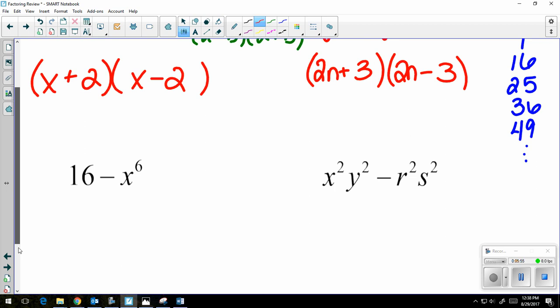Two more examples, and then we'll move on. Once again, two parentheses. One gets a plus, one gets a minus. Square root each piece. Square root of 16 is 4. Be careful here that 4 has to stay in the first spot of each parentheses because the 16 came first in the original problem. And then the square root of x to the 6th is going to be x to the 3rd.